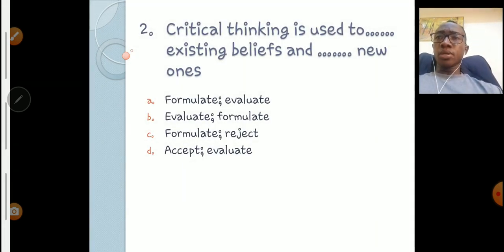Number two: Critical thinking is used to [blank] existing beliefs and [blank] new ones. Formulate evaluate, evaluate formulate, formulate reject, or accept evaluate. Now we can cancel two of the options out. The two key words are evaluate and formulate. But the question is which one comes first? In critical thinking we evaluate existing beliefs and we formulate new ones. So B is the answer. Critical thinking is used to evaluate existing beliefs and formulate new ones. Let's move to question number three.